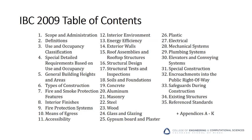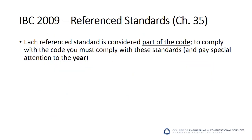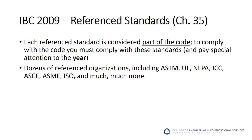If we zoom in on the International Building Code, you will see that it's subdivided into logical sections that make it easy to find the area of interest. A key point about the International Building Code is the referenced standards — each referenced standard is considered a part of the code. To comply with the code, you must comply with these standards, and pay special attention to the year listed for which standard you're complying with. Dozens of referenced organizations, including ASTM, UL, NFPA, ASCE, and many more are referenced by the code.